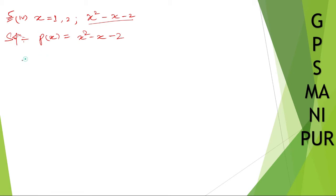So at x is equal to one, P of one is equal to, instead of x putting one, so one squared minus one minus two, so one minus one minus two, so one minus three, which will be minus two.